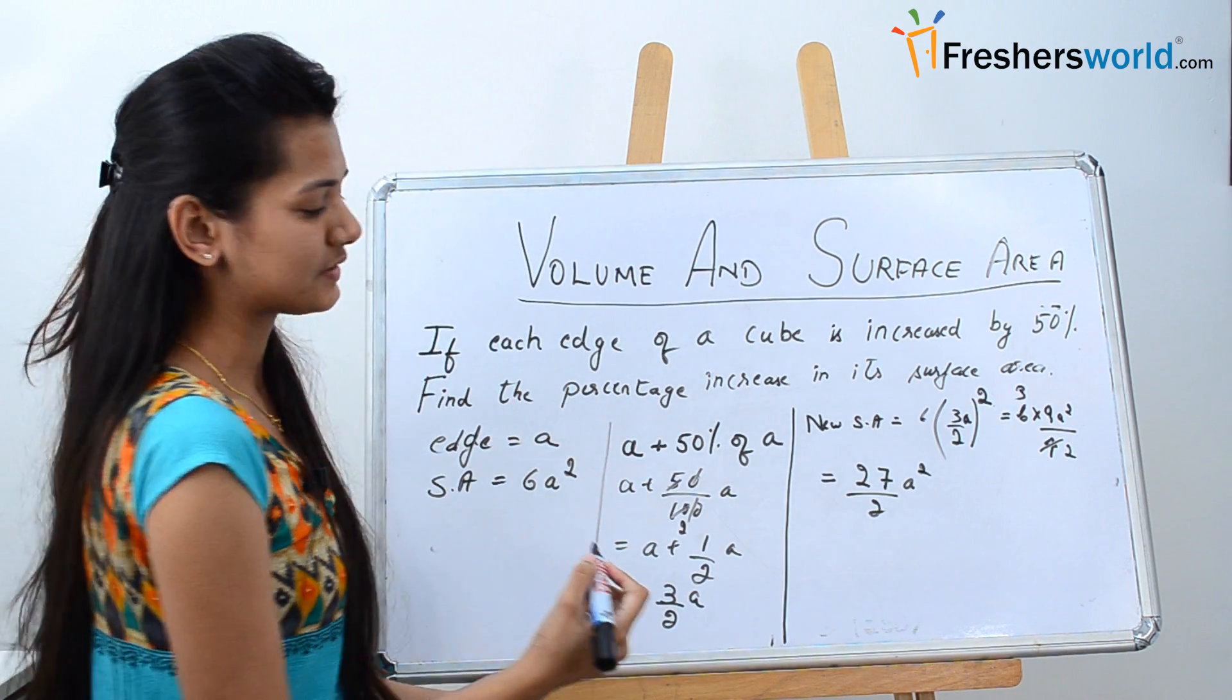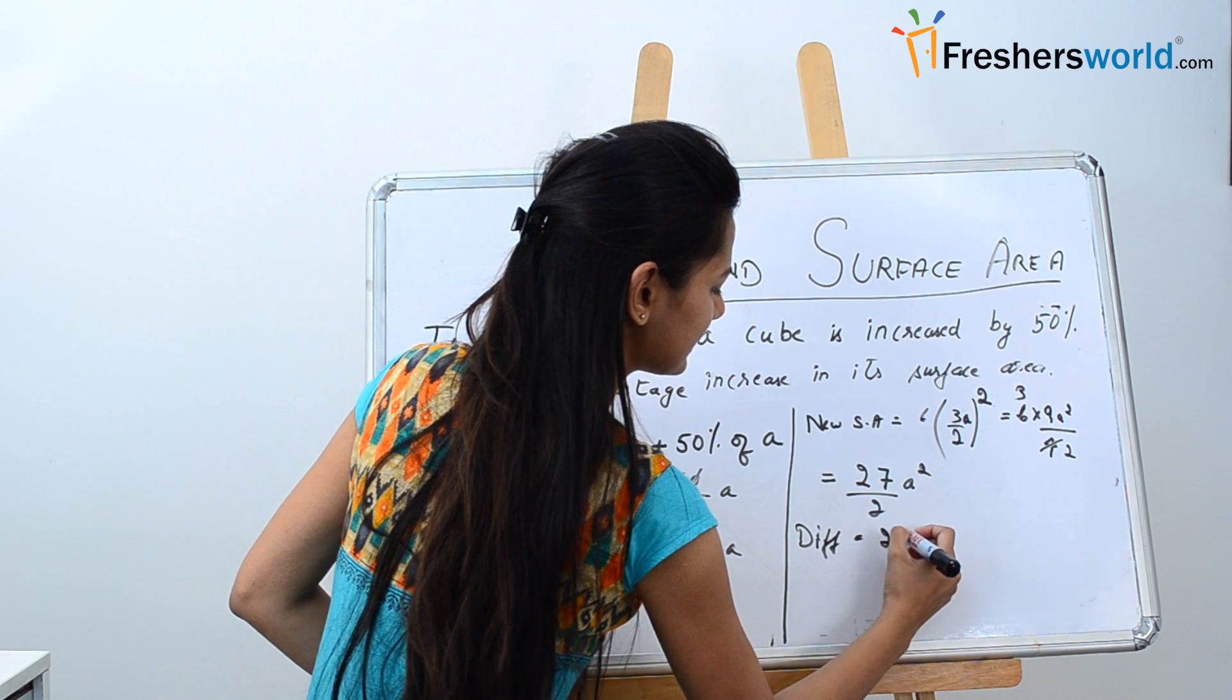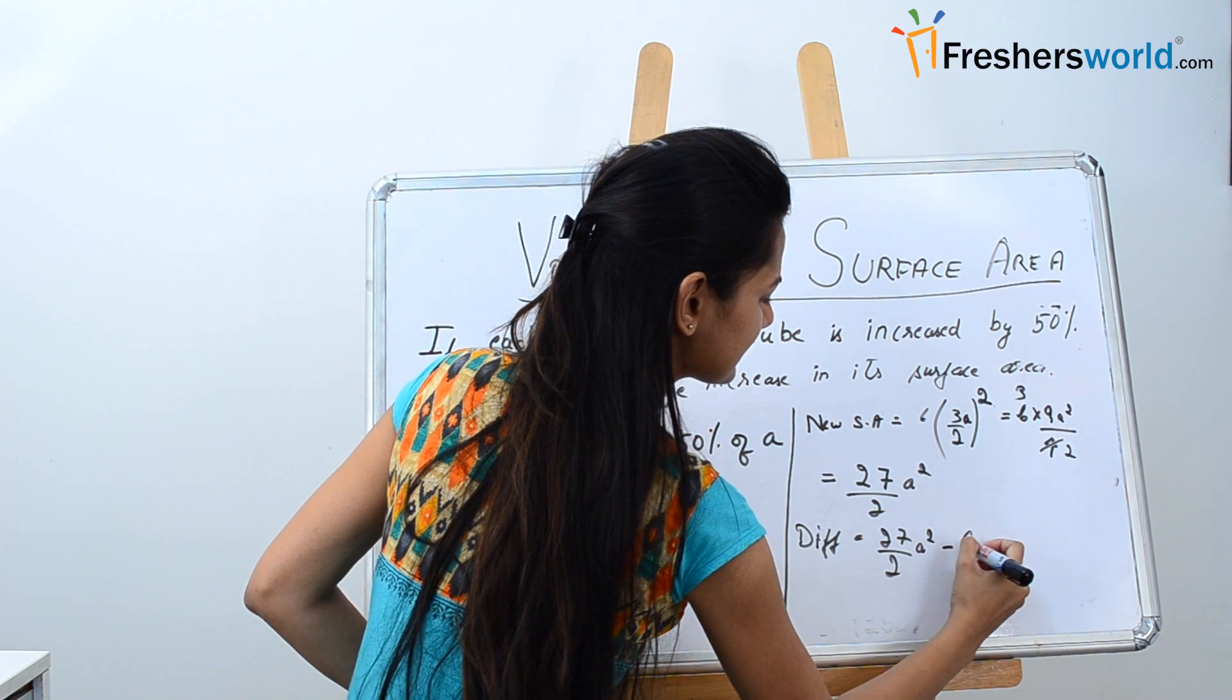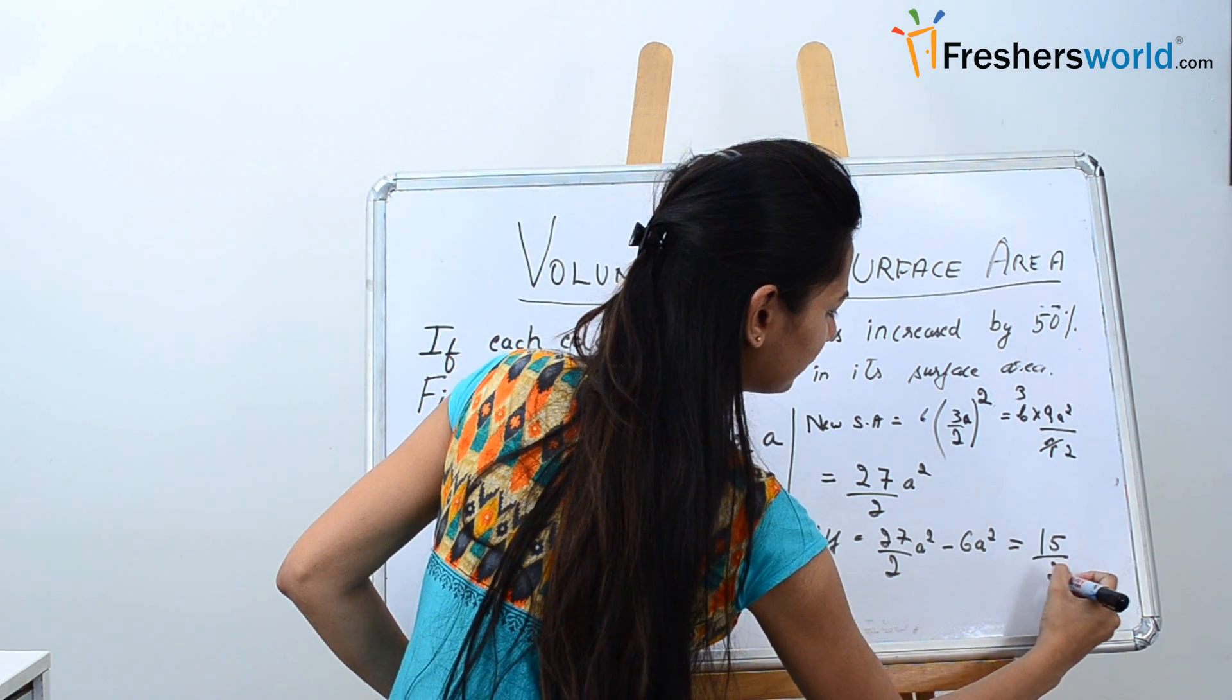Now we need to find the difference in the surface area. The difference in the surface area will be given by 27 by 2 a squared minus 6 a squared. That is equal to 15 by 2 a squared.